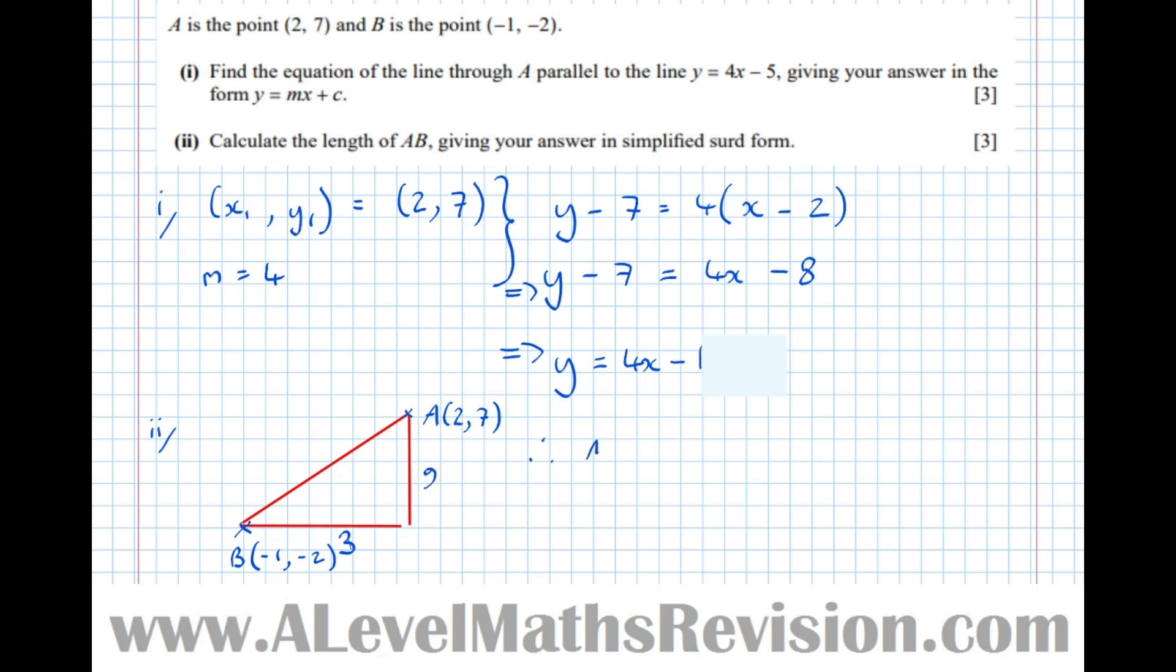Therefore, the length of AB equals square root of 3 squared plus 9 squared, which is the square root of 90. But it asks for it in simplified surd form. So that's root 9, root 10, which is 3 root 10. That's it for this tutorial.